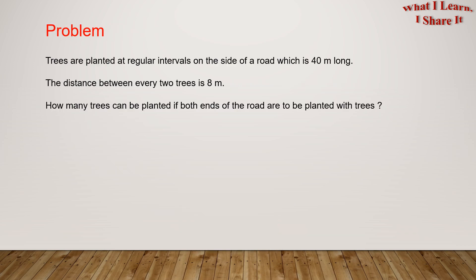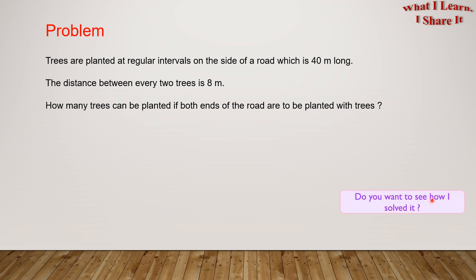Here is a problem to help us understand this. Trees are planted at regular intervals on the side of a road which is 40 meters long. The distance between every two trees is 8 meters. How many trees can be planted if both ends of the road are to be planted with trees? Do you want to try it yourself? Feel free to pause the video and try it yourself. Do you want to see how I solved it? I solved it in a step-by-step way. Let's see it.